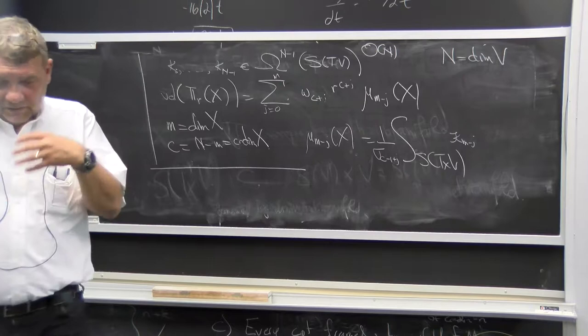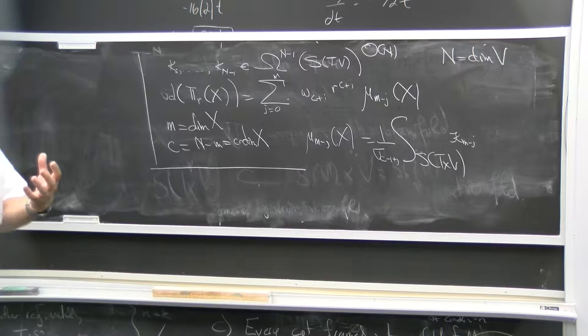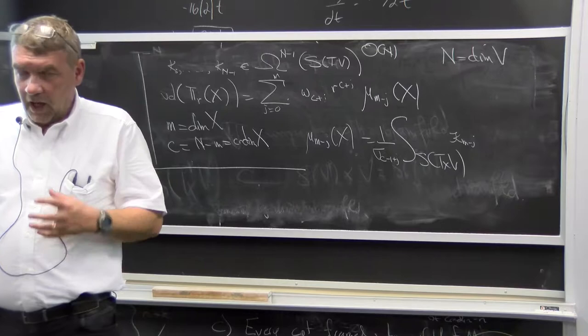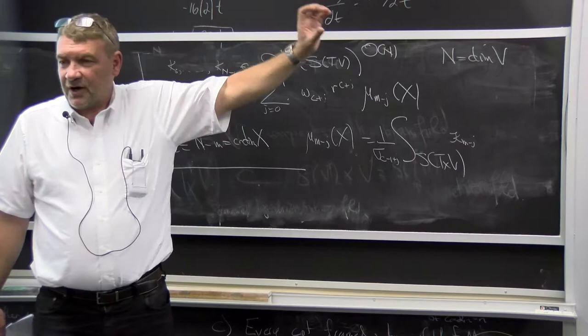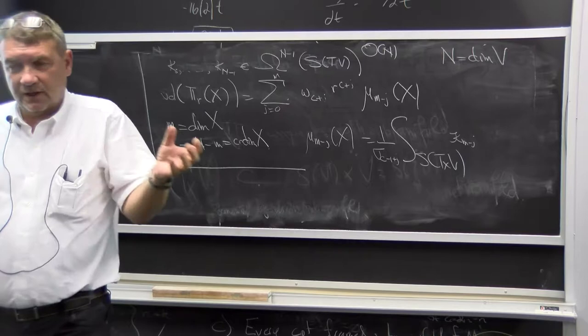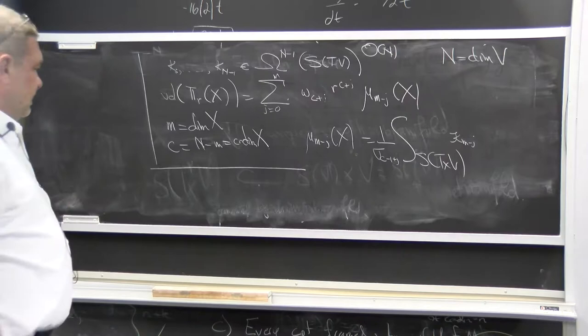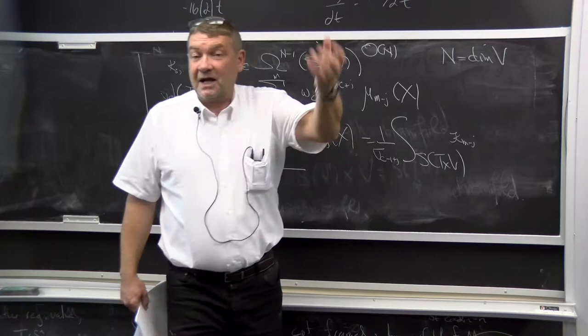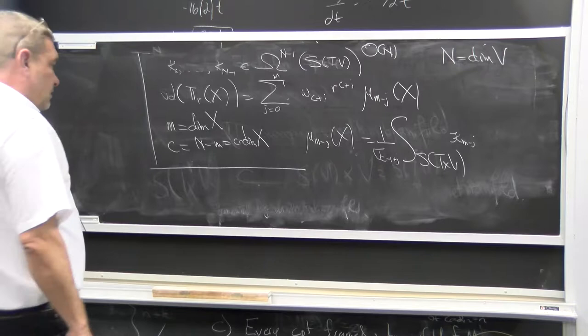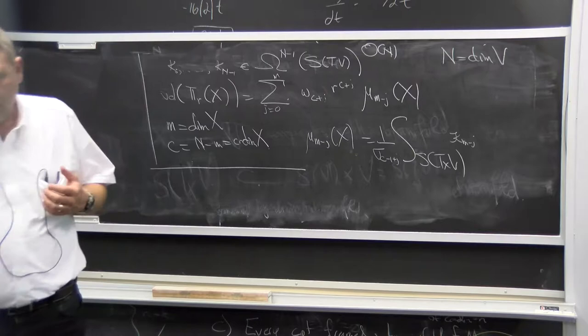What I want to do is associate to rather large classes of very singular sets sitting in V a Legendrian cycle that keeps track of the Morse theory of the linear functions on X. We're doing singular Morse theory — homological Morse theory. And then I can define the curvature measures in this fashion. Once I have something resembling a normal bundle associated to a singular set, I can hope to introduce curvature measures.